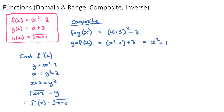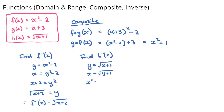For the inverse of h(x), we start with y equals the square root of x plus one, then swap x and y to get x equals the square root of y plus one. Squaring both sides gives x squared equals y plus one, and subtracting one gives y equals x squared minus one. So h inverse of x is x squared minus one.